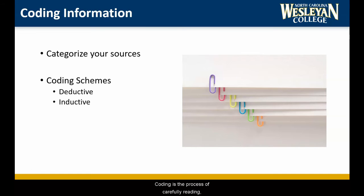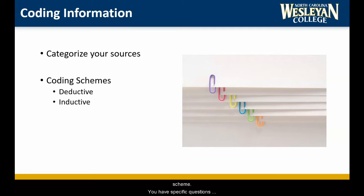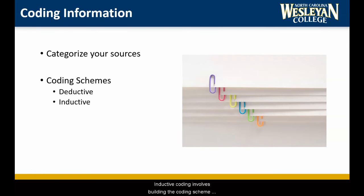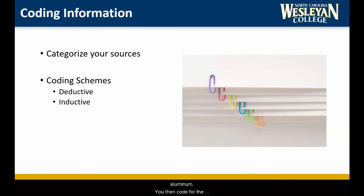Coding is the process of carefully reading, analyzing, and categorizing your sources based on patterns in the research. There are two major coding schemes: deductive and inductive. Deductive coding uses a predetermined coding scheme. You have specific questions you want to answer or aspects of the topic you want to address, so you only focus on how those are discussed in the literature. For example, before reading your sources you know that you want to code for materials used in the creation of prosthetics, so you only search for sources on materials and then code for discussions on metal and ceramic prosthetics. Inductive coding involves building the coding scheme after you have reviewed the literature and identified patterns in the conversations. For example, you collect every source you can on prosthetics and discover that many sources look at the metals used, specifically titanium and aluminum. You then code for the benefits and shortcomings of each. It's important to note that you will likely use a combination of both deductive and inductive coding. This approach is perfectly acceptable.